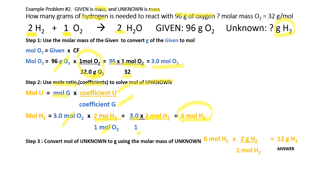But the problem asks for grams, not moles of hydrogen. Therefore, Step 3: convert to grams by multiplying by the molar mass of hydrogen. 6 mol H₂ × (2 g H₂ / 1 mol H₂) = 12 grams of hydrogen.